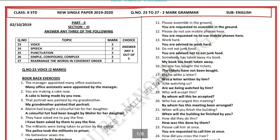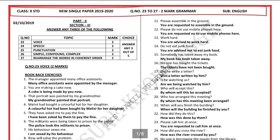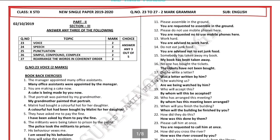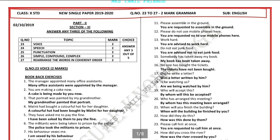Question number 23 is speech and punctuation. Question 27 is the reference to the correct word order. This is the 2-mark grammar section. This is the answer to any 3 out of 5.